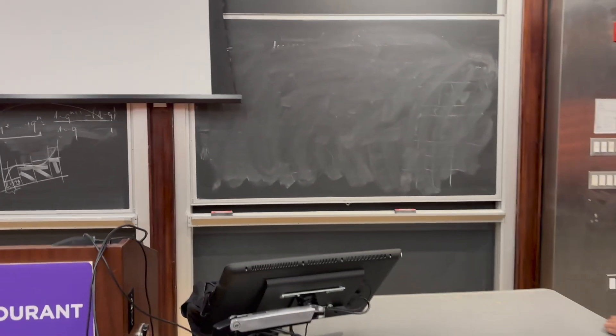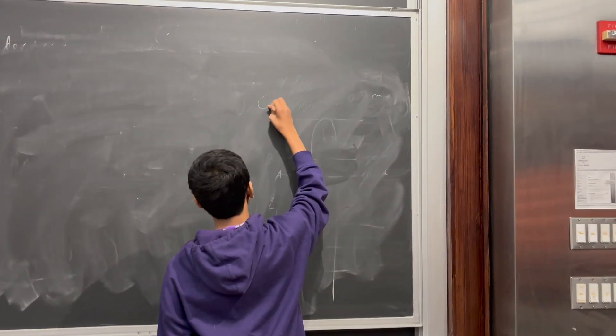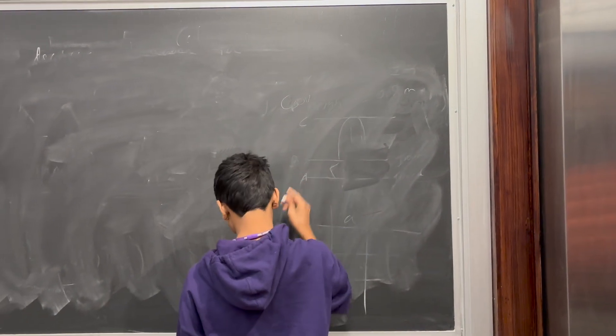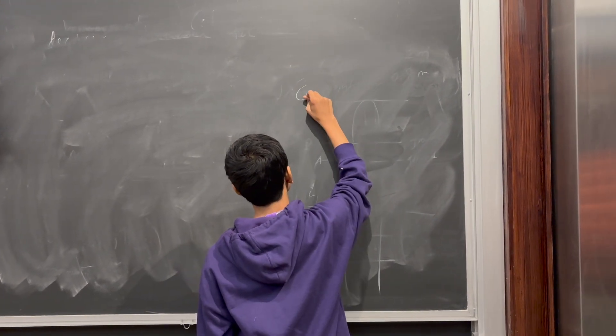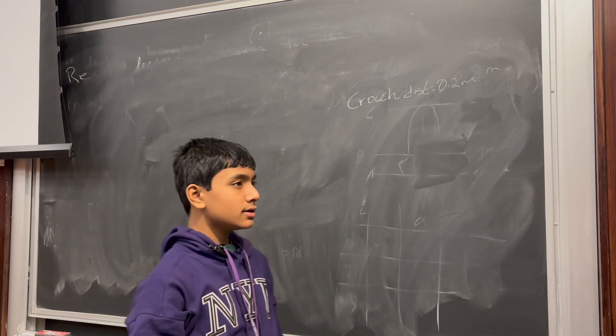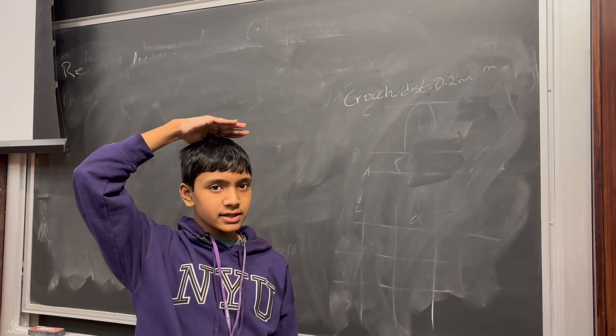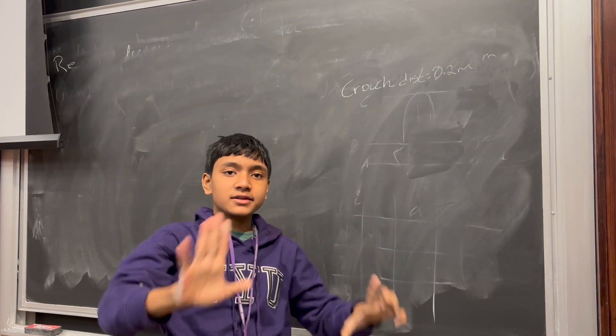So, what does that give us? We know that the crouch distance is 20 centimeters below his original height. Something like this is my original height, I crouch, this is 20 centimeters, not to scale.